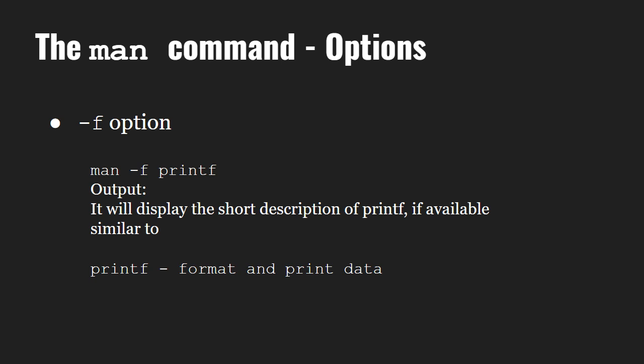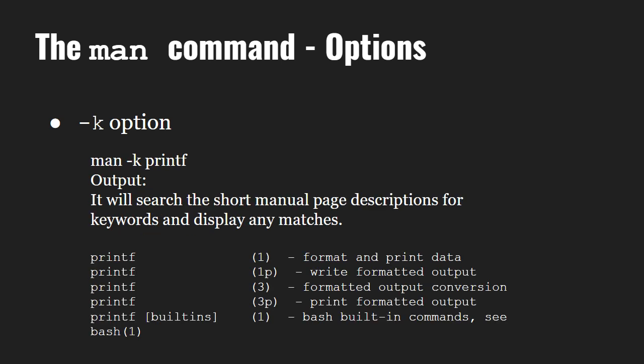First is the -f option, which will only display a short description of the command. Next is the -k option. The -k option will search for the keyword in the manual page and display the matches. For the argument printf, the output will show all results where there is a printf in the whole manual. Let us see the two options on our system.